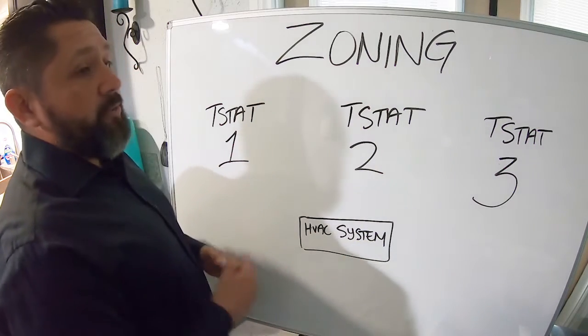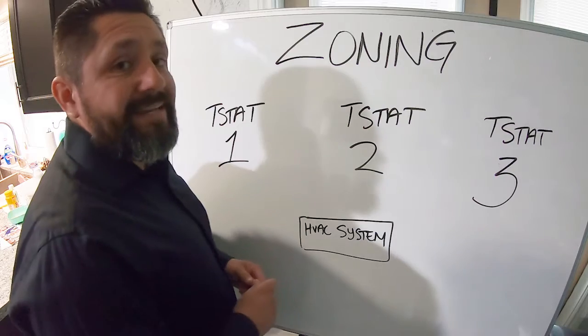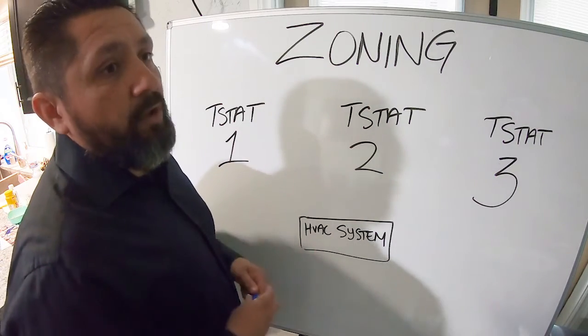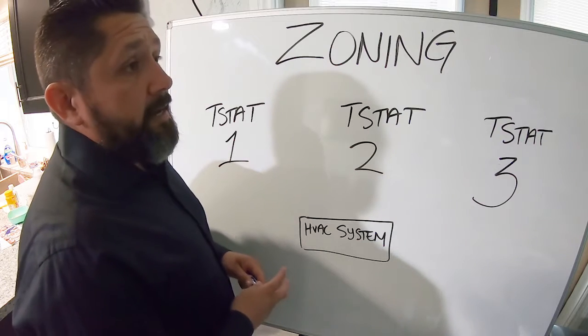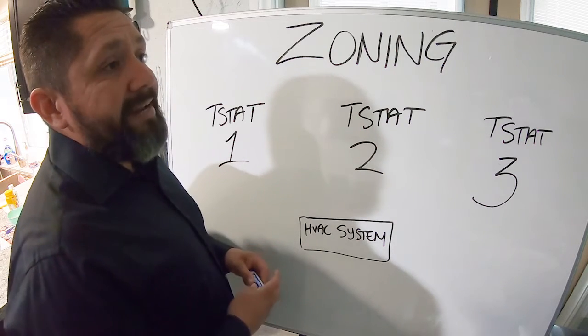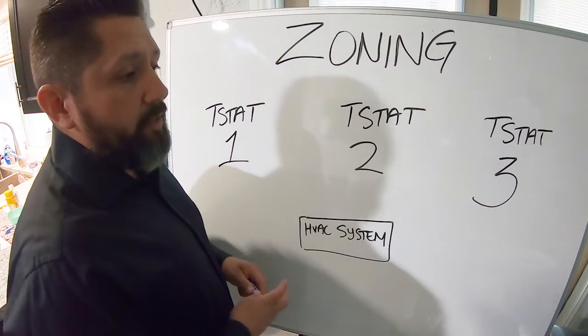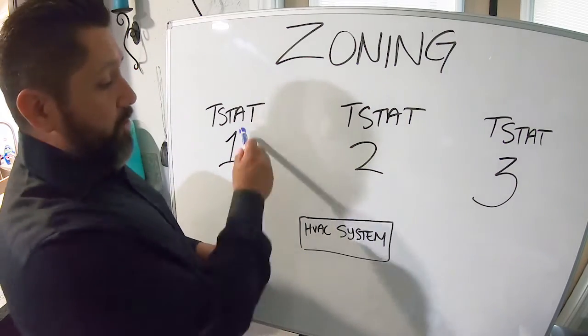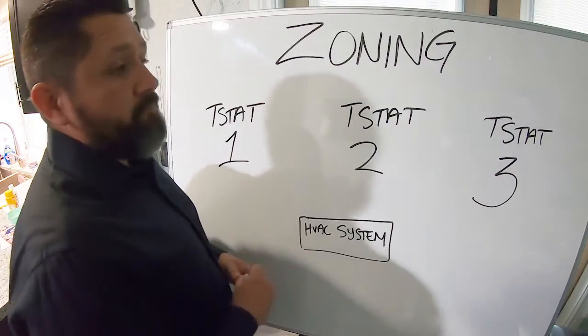What zoning does is say if you had one thermostat inside of your house right now, thermostat one, and it supplied the whole house. But say you had two stories and you wanted to go ahead and see if your house was capable of having zoning. What zoning does is it now turns your one unit, your one thermostat, and can turn it into multiple thermostats.